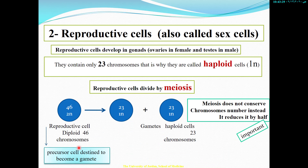Now let's talk about reproductive cells. Your course in embryology focuses on reproductive cells. Reproductive cells, also called sex cells, can only be found in the gonads — the reproductive organs. In males these are named the testes, and in females they are the ovaries. Only there can you find sex cells. These cells contain only 23 chromosomes, which is why they are called haploid cells.